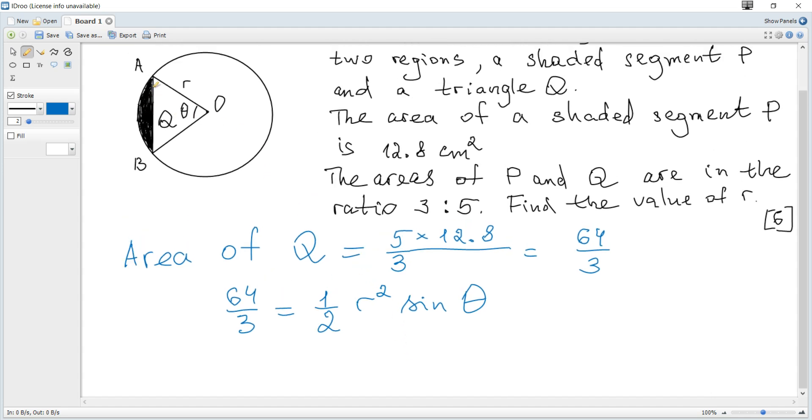We can consider the area of a sector because we know a formula for the area of a sector. And area of sector OAB is the sum of areas P and Q. So the ratio of P to area of sector OAB, this ratio is 3 to 8. And hence the area of a sector is 8 over 3 times greater than the area of P. Or again, if you divide 12.8 by 3, you find per one part and the required area of sector is 8 parts. So you then multiply by 8.